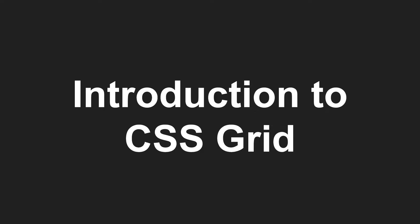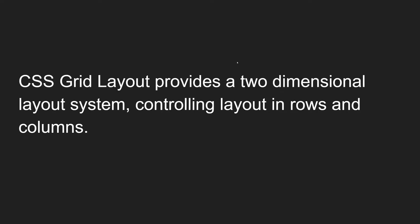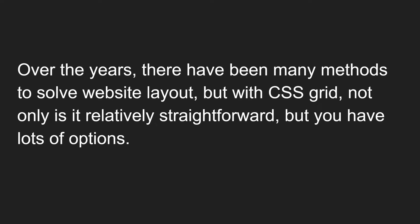Let's see the introduction to CSS Grid. The CSS Flexbox layout provides a one-dimensional layout system, whereas the CSS Grid layout provides a two-dimensional layout system, controlling layout in both rows and columns. In Flexbox we can control either a row or a column — not both. In CSS Grid, it's a two-dimensional layout, so we can control both rows and columns combined together.